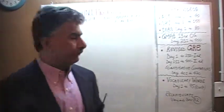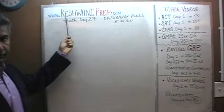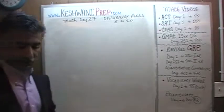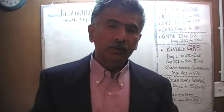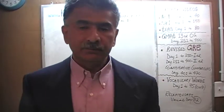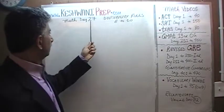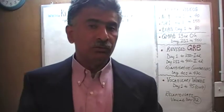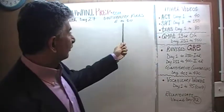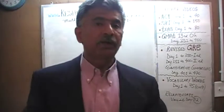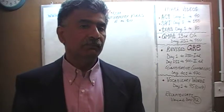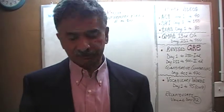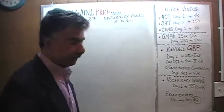Hello, my name is Kishwani — that's K-E-S-H-W-A-N-I. We are here because we want to learn some math. Today is lesson number 27. Today I will discuss what are known as divisibility rules 6 through 10 — how do we know, by simple visual inspection, that a number is going to be evenly divisible by 6?